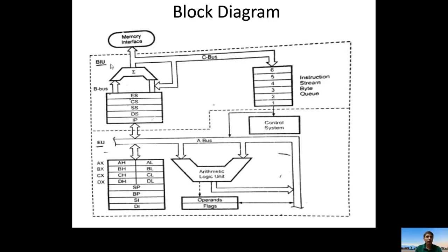The Bus Interfacing Unit is the only unit that communicates with external memory devices or I/O devices. The 8086 does not have any internal memory, so every time it fetches instructions from external memory or I/O, performs the required operation, and sends the result back to external memory. The main role of the BIU is fetching — it reads the instructions from external memory or I/O device, and after reading, those instructions are stored in the six-byte instruction queue.